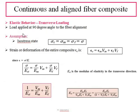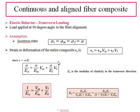For transverse loading — the load applied 90 degrees to fiber alignment — the assumption is the isostress state, where stress throughout the composite, matrix, and fiber is the same. The strain deformation of the entire composite is expressed in terms of volume fractions as we discussed for stresses. Substituting the values of epsilon, we get the equation for E_ct, the transverse modulus of elasticity. Dividing throughout by sigma, we obtain: 1/E_ct = V_m/E_m + V_f/E_f, from which E_ct is calculated.